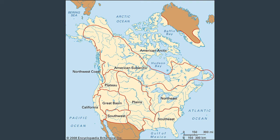Here we have our map of what is now known as the United States and Canada, and we can see that we have grouped the United States and Canada into nine distinct regions. Even though we've grouped indigenous nations into nine different regions based on similarities, it is important to note that every indigenous nation in these regions has a unique culture and unique practices, but we are going to take a look at some of the things that make them similar.